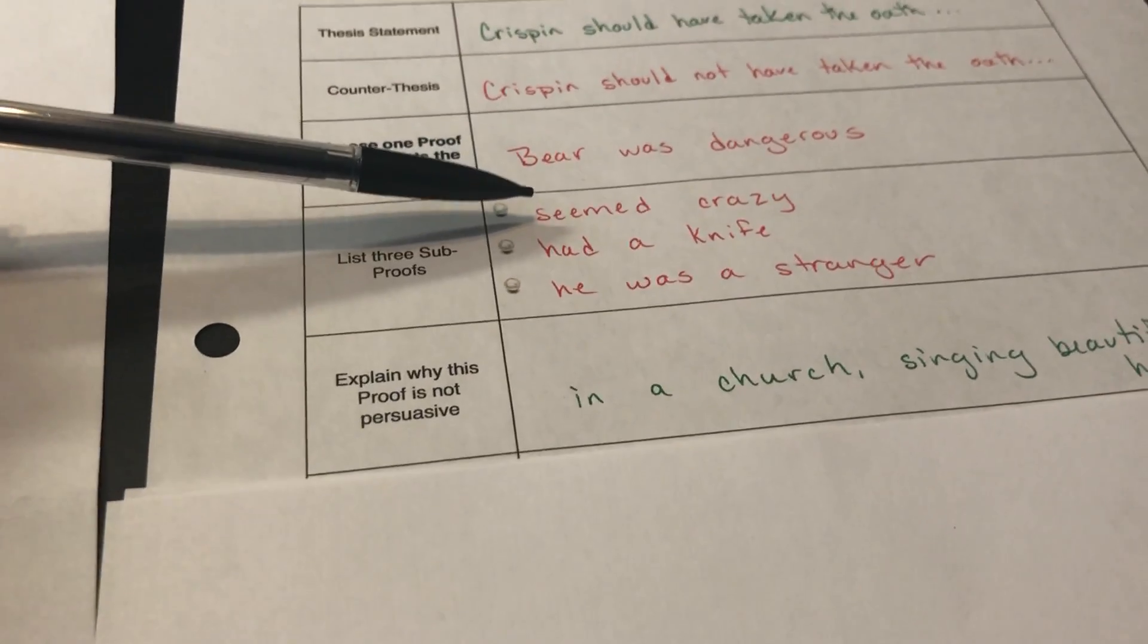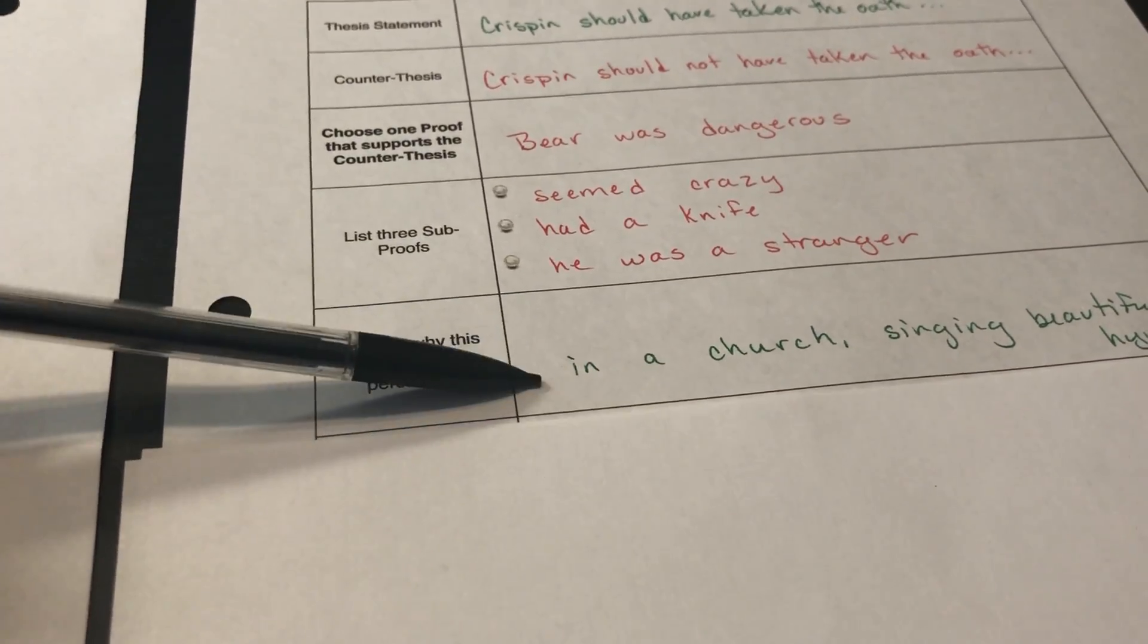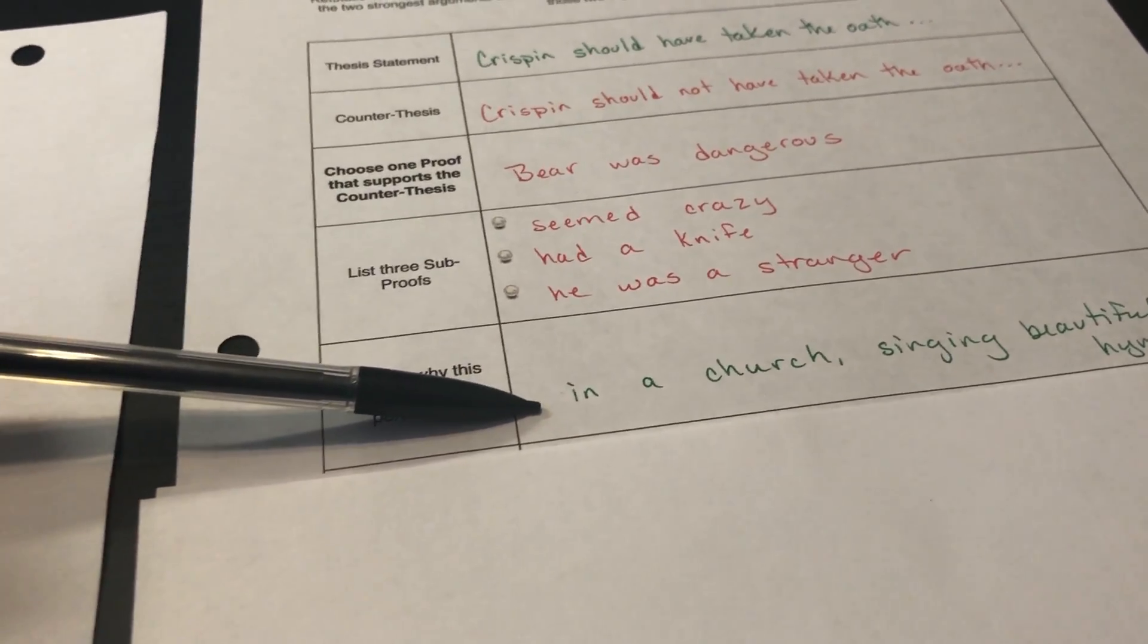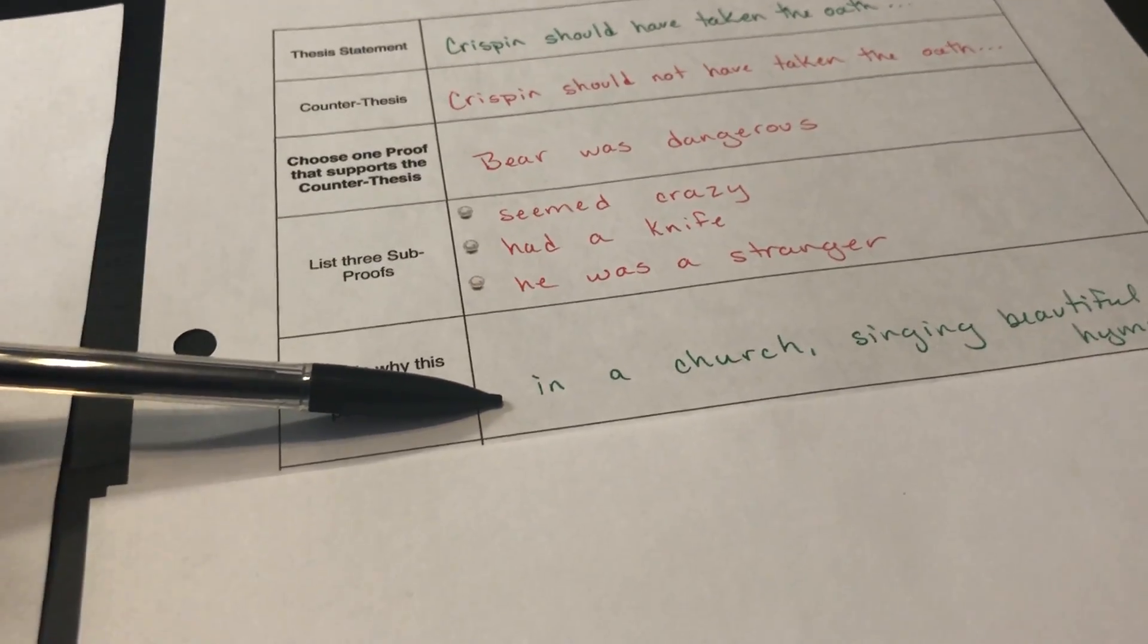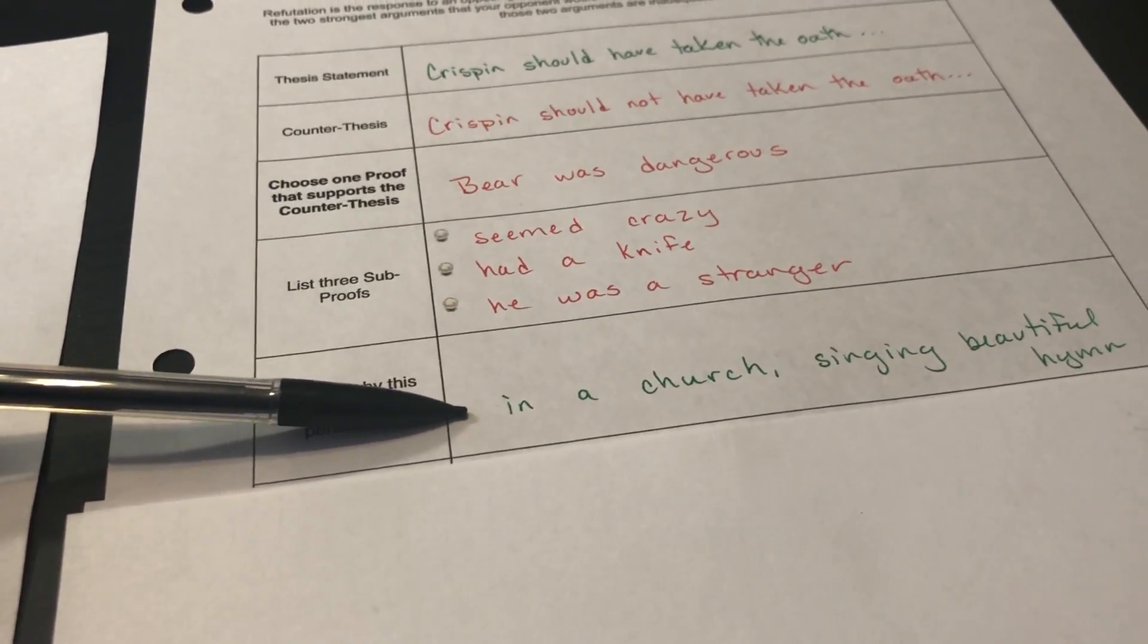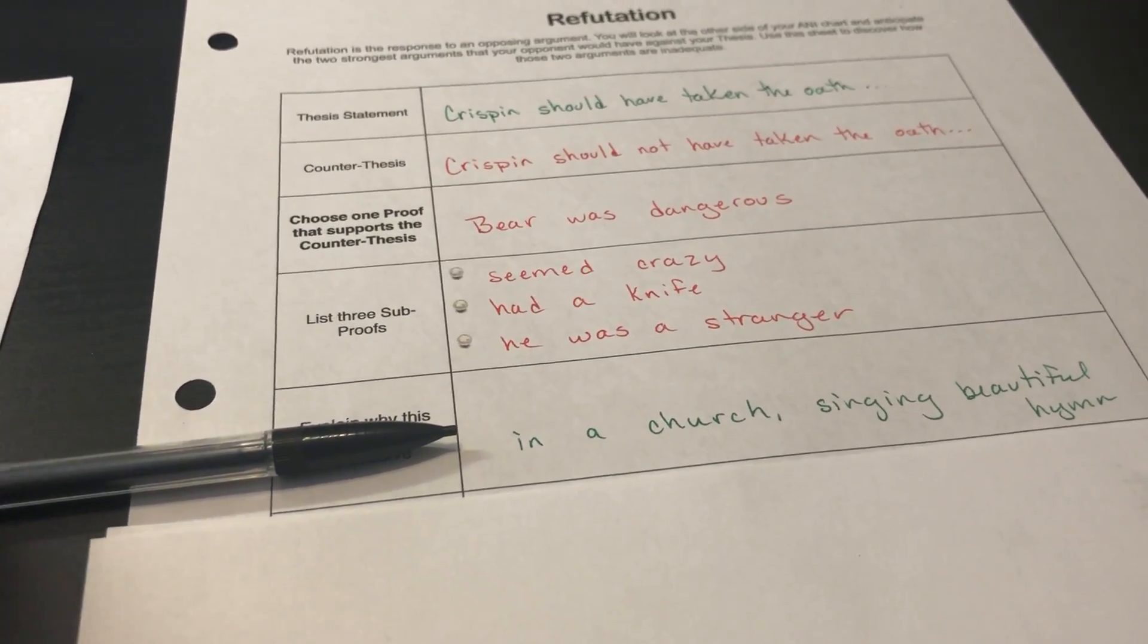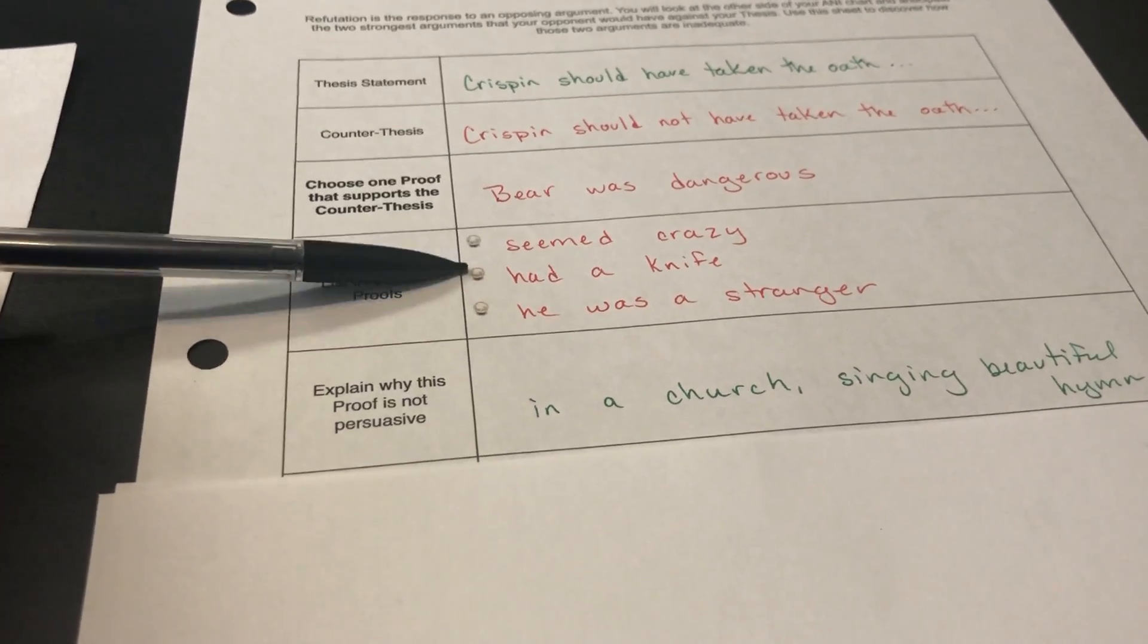After all, he seemed crazy, he had a knife, and he was a stranger. So here's our counter to that. Well, he was, after all, in a church by himself. And he was singing a beautiful hymn. Clearly, he was worshiping God, and that should have eased Crispin's concerns. So there is our answer to those who come against our thesis.